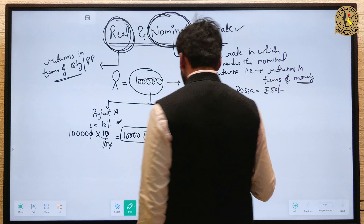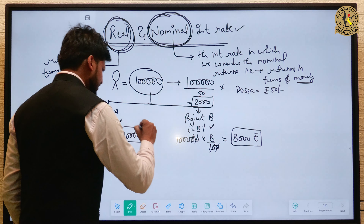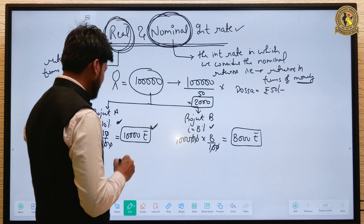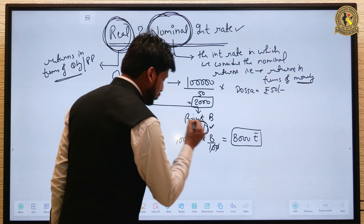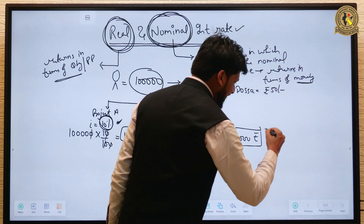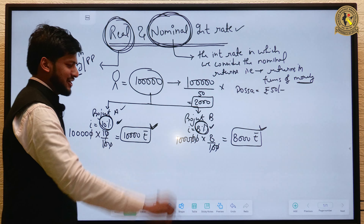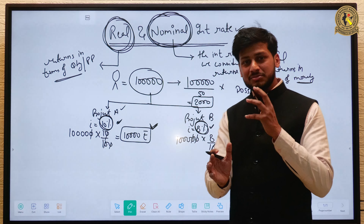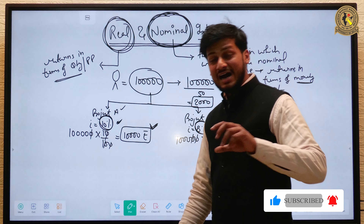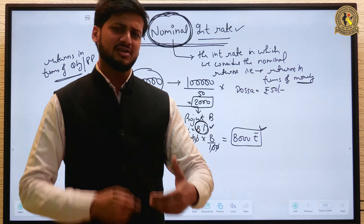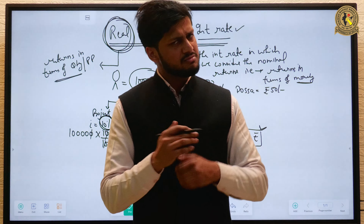अगर आप इन दोनों ही amounts को देखें तो कोई भी कह देगा कि इस individual को Project A में invest करना चाहिए क्योंकि वहाँ पे return 10% का है और Project B में सिर्फ 8% का है। यह कहानी तब तक है जब तक हम सिर्फ nominal interest rate की बात कर रहे हैं। अगर हम real interest rate की बात करें तो हमें inflation के factor को भी add करना होगा।